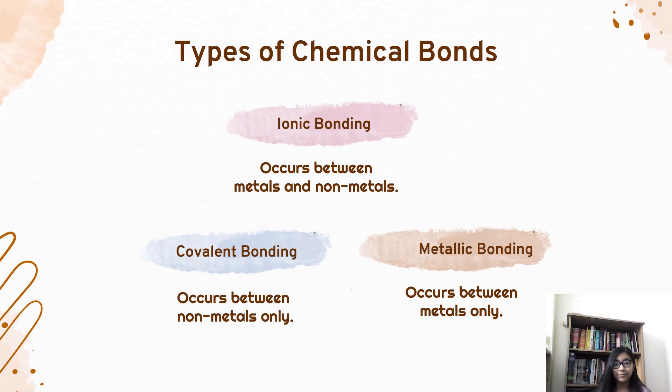There are three types of chemical bonding. Firstly, we have Ionic Bonding. Ionic Bonding occurs between metals and non-metals. Covalent Bonding occurs only between non-metals. Metallic Bonding on the other hand occurs between metals only.